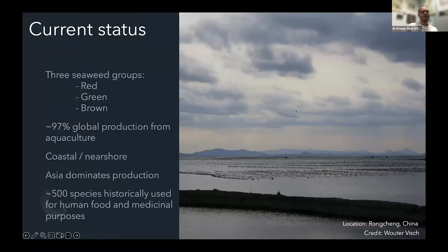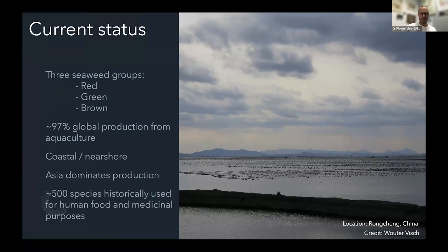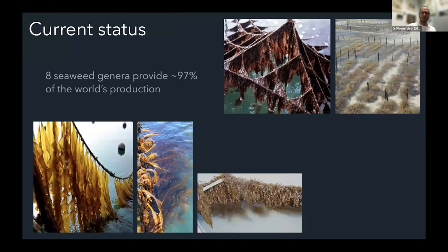As a quick recap, there are three seaweed groups — the reds, the greens, and the browns — and roughly all of them are produced from aquaculture. But currently this is mainly done in coastal and near-shore environments, as you can see in this photo from China. Asia dominates production, and depending on the species and genus it varies between countries. Roughly 500 species have historically been used for human food and medicinal purposes, and of those 500, there are roughly eight seaweed genera that provide all this global biomass.